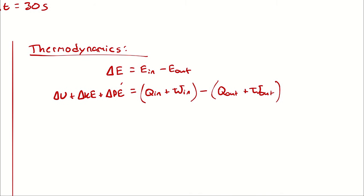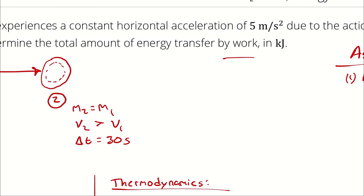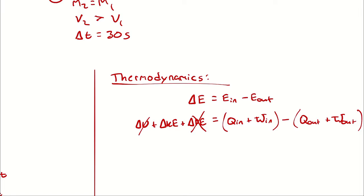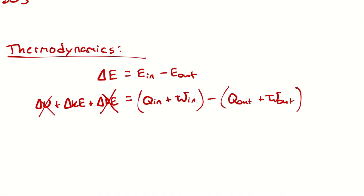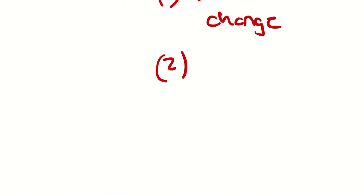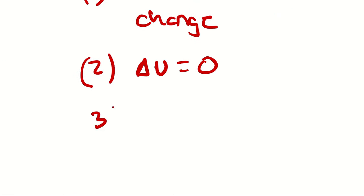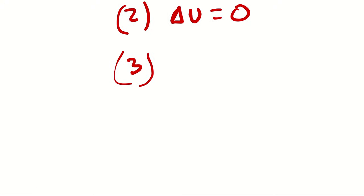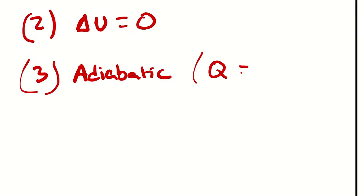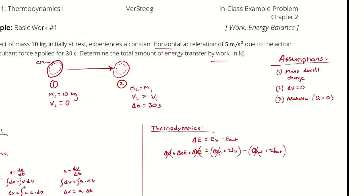I recognize there is no change in potential energy — that's not even an assumption we have to make because we were told it's horizontal acceleration. I will also assume there are no changes in internal energy, since we were given no indication of anything meaningful about internal energy changing; there's no mention of temperature change or phase change. I will write delta U equals zero. And while we're at it, let's add no heat transfer, which I can write as adiabatic — a word that means no heat transfer.